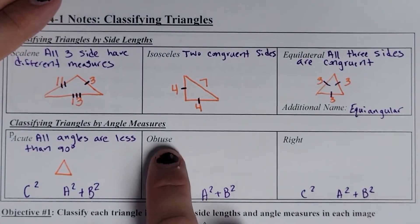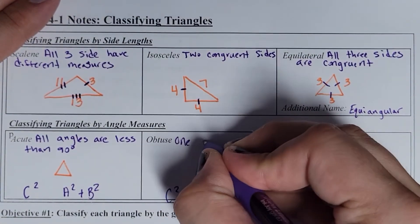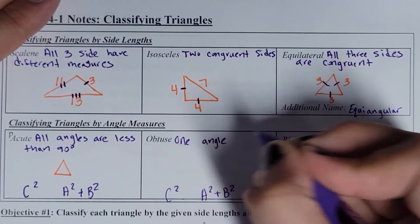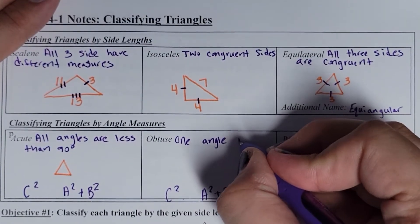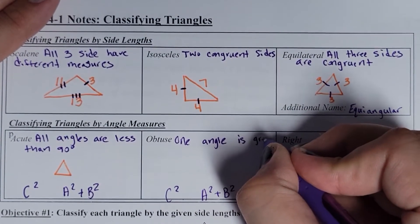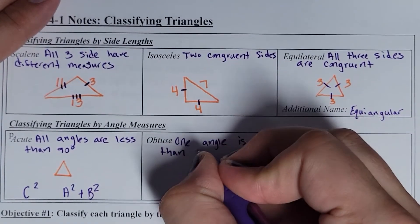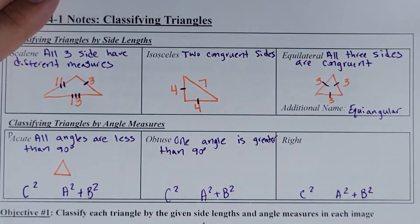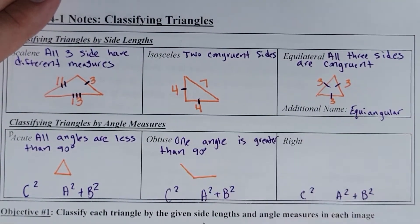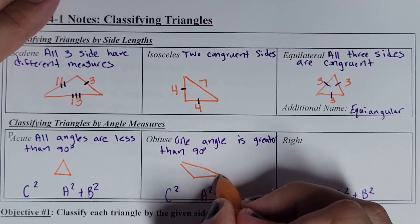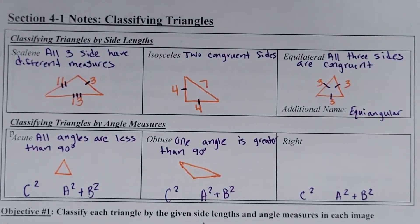If you have an obtuse triangle, that just means one angle — just one, it doesn't have to be all of them — if one of the angles is greater than 90 degrees, you have an obtuse triangle. So just one angle is bigger than 90 degrees, and something like that might represent an obtuse triangle.